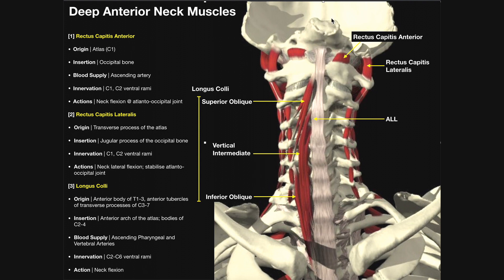Let's take a look at this picture and orient ourselves. This is an anterior view of the cervical spine. This bone is the C1 vertebra or atlas. Below that we have the C2 vertebra or axis. Down here is rib number one on the patient's left side, and over here is rib number one on the patient's right. Situated directly above those are the clavicles, and up here is the skull.